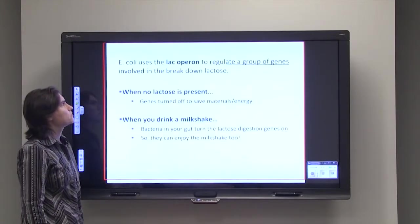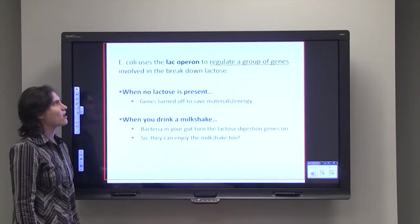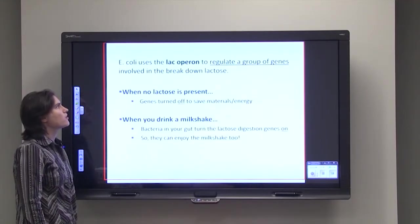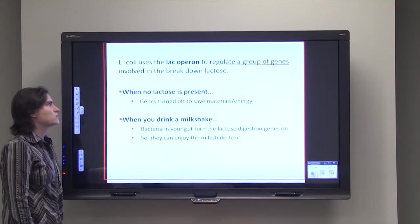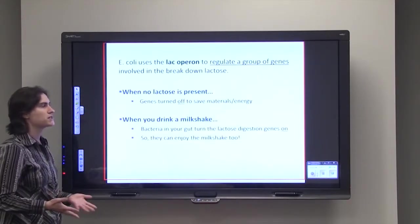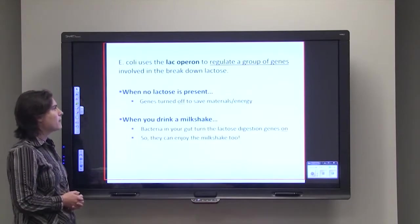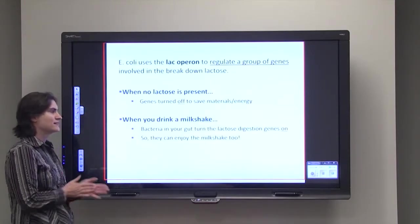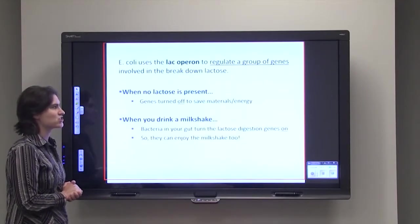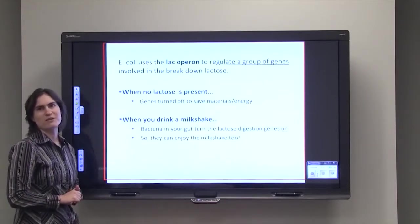E. coli uses an operon that's called the lac operon or the lactose operon. This regulates a group of genes involved in the breakdown of lactose. So when no lactose is present, the genes are turned off to save materials and energy. But when you drink a milkshake, the bacteria in your gut turn on lactose digestion genes so they can also enjoy that milkshake as well.